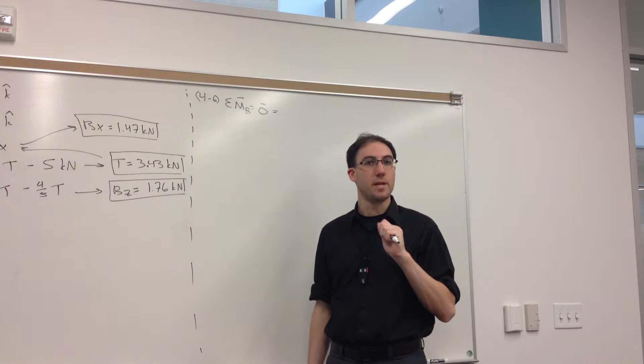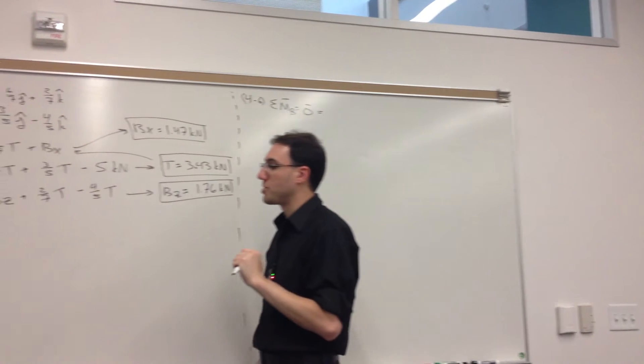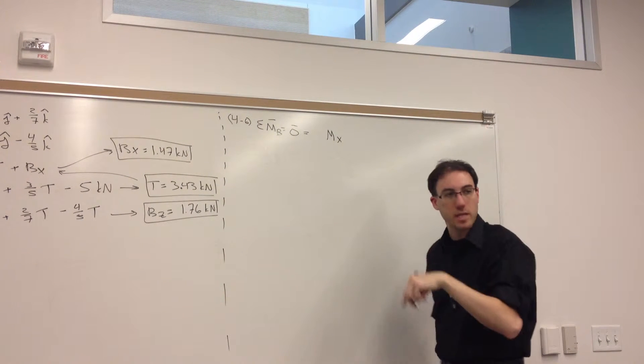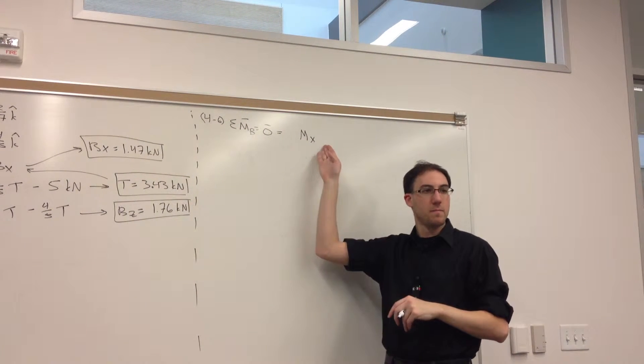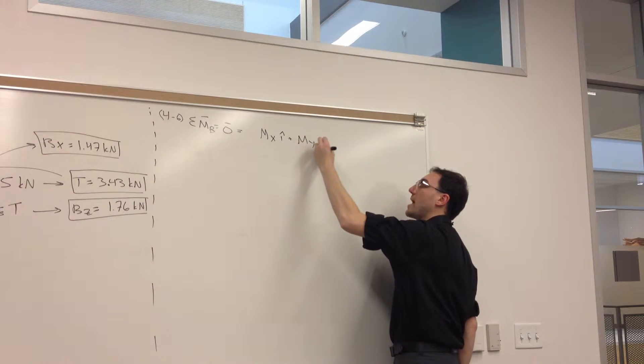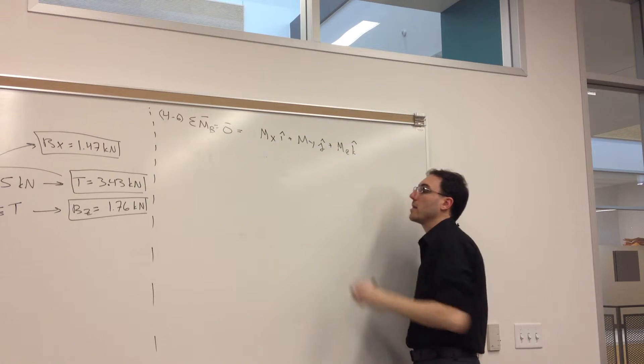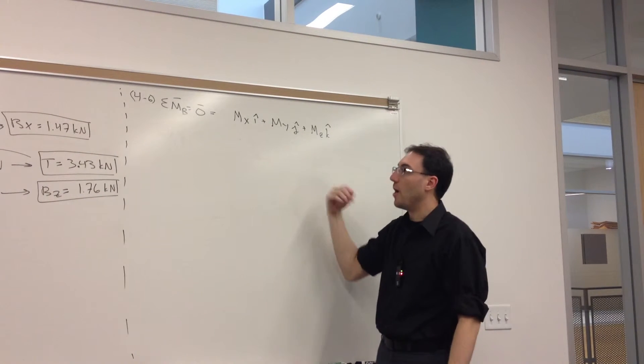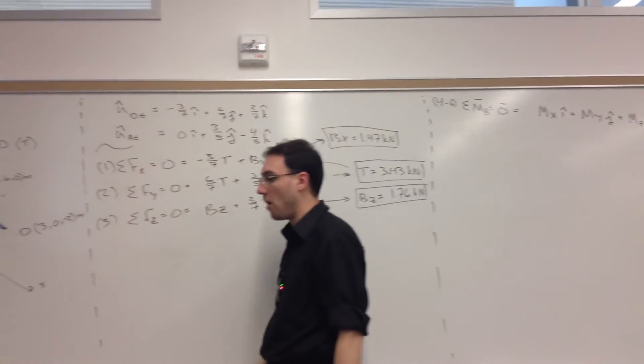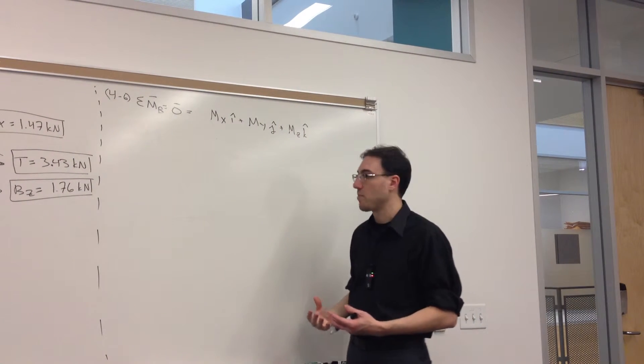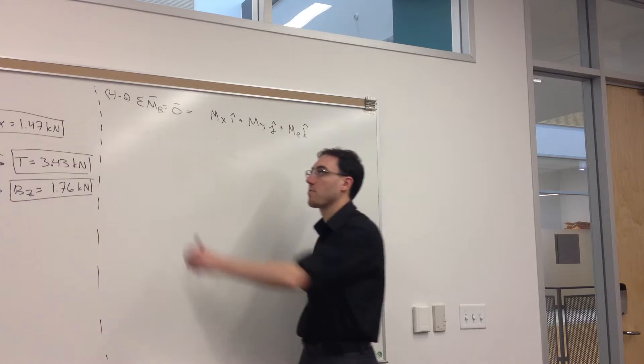Alright, the forces pretty much write themselves. We just have to look at the picture and our components. The moment we have to be much more careful of in how we formulate this. Let's look at the right-hand side. What is going to comprise the right-hand side of the moments around B? MX - that couple from the shaft onto the collar. But this is a vector equation, so MX is entirely in the i-hat direction. Then we need the same thing for MY in the j-hat, and MZ in the k-hat. I'm assuming they're all positive. I look for all of the couples first because it's easy to forget them otherwise.